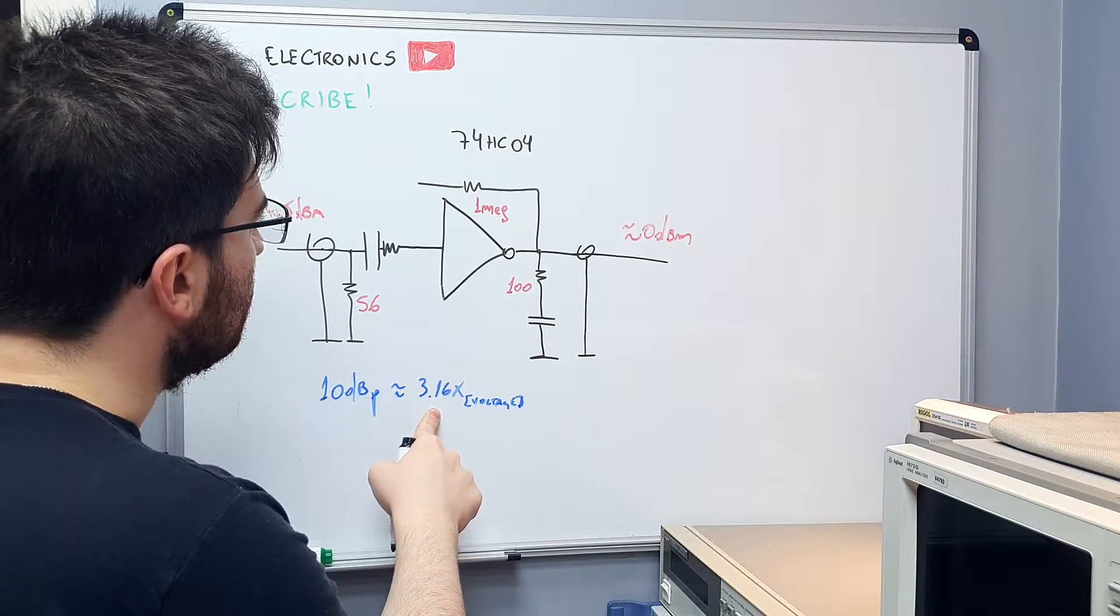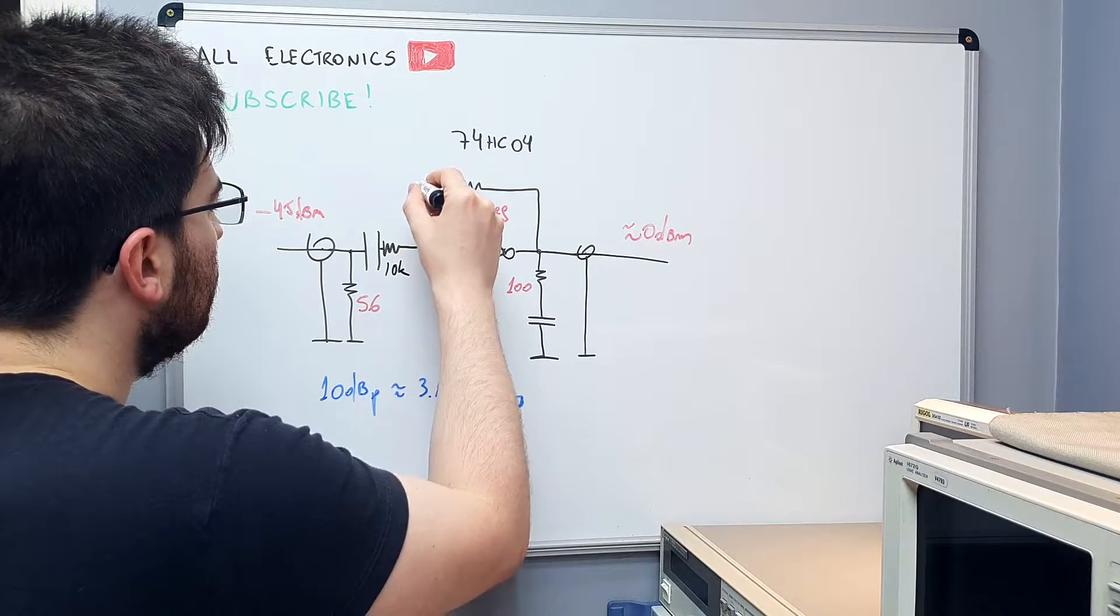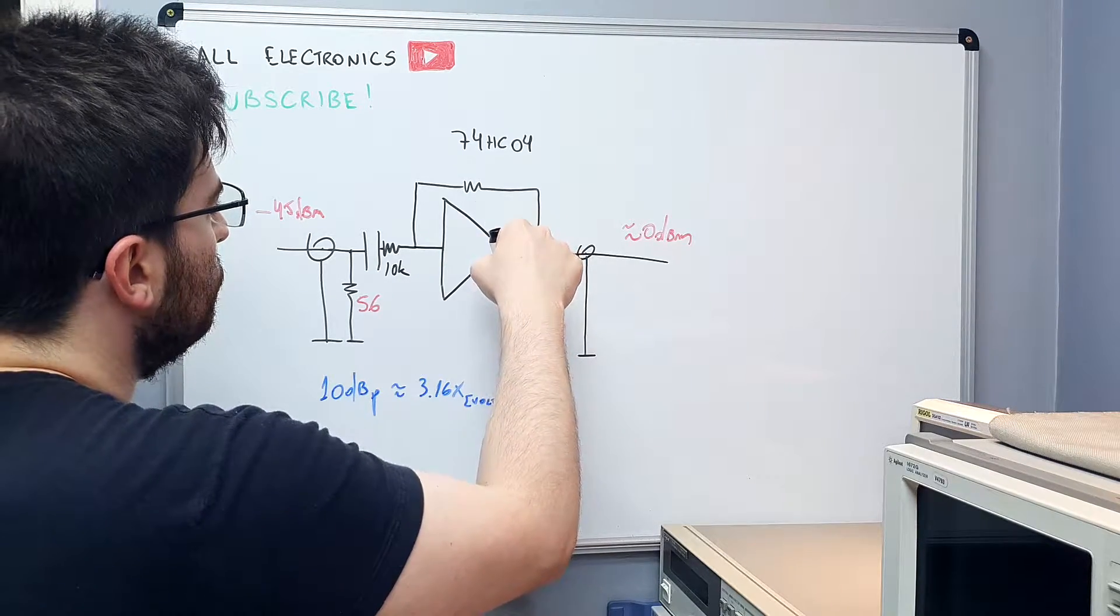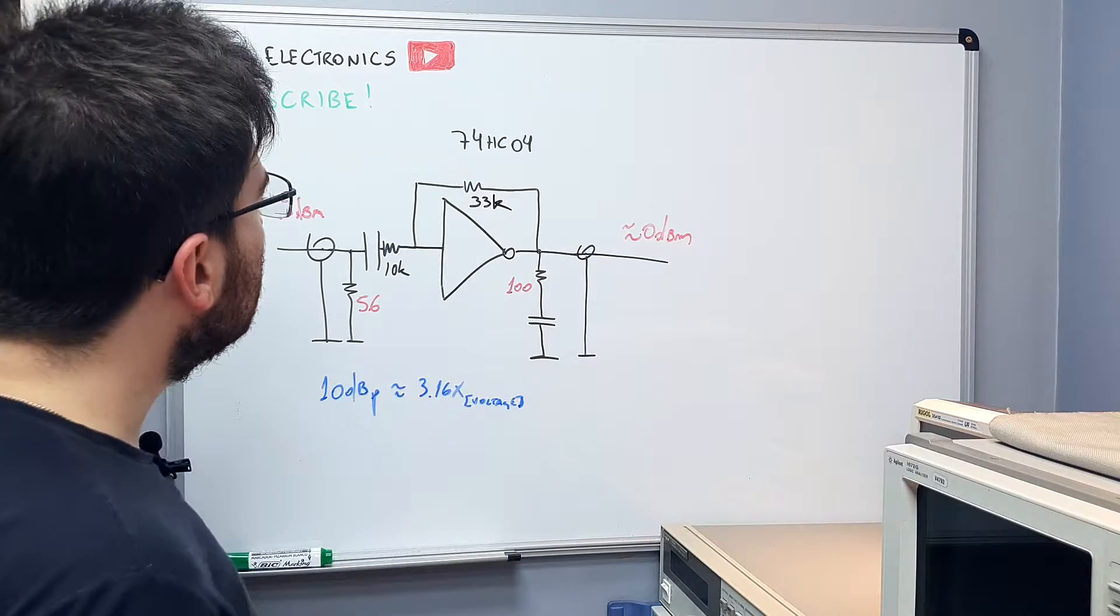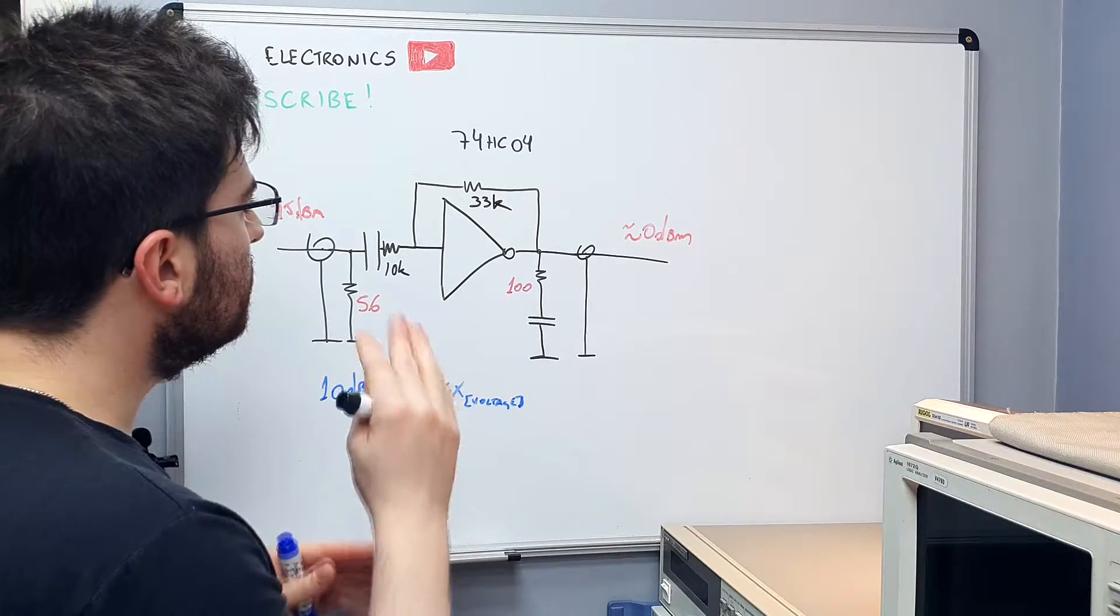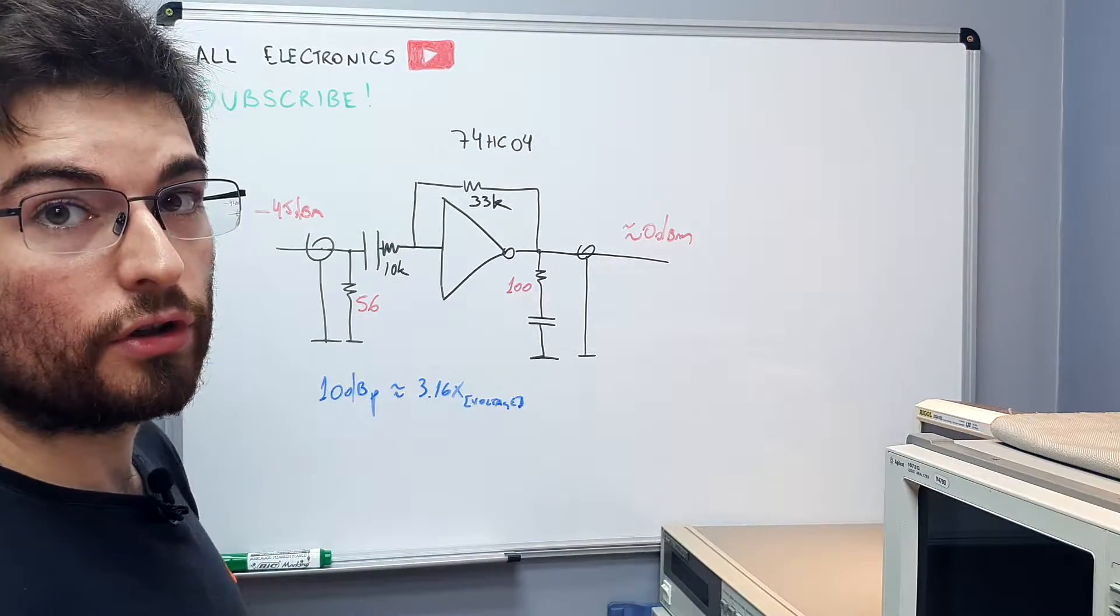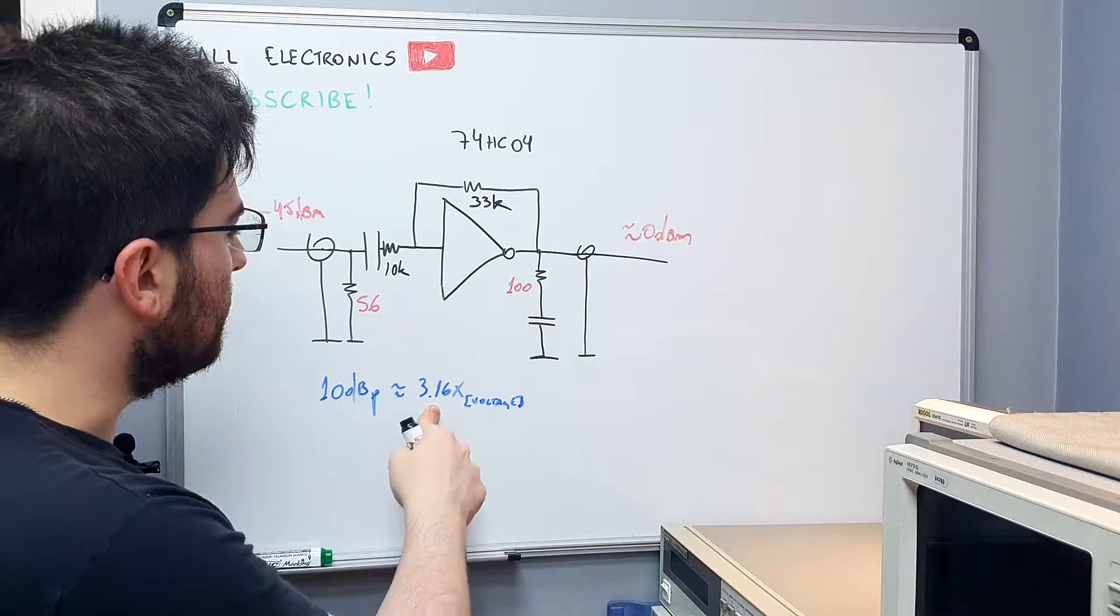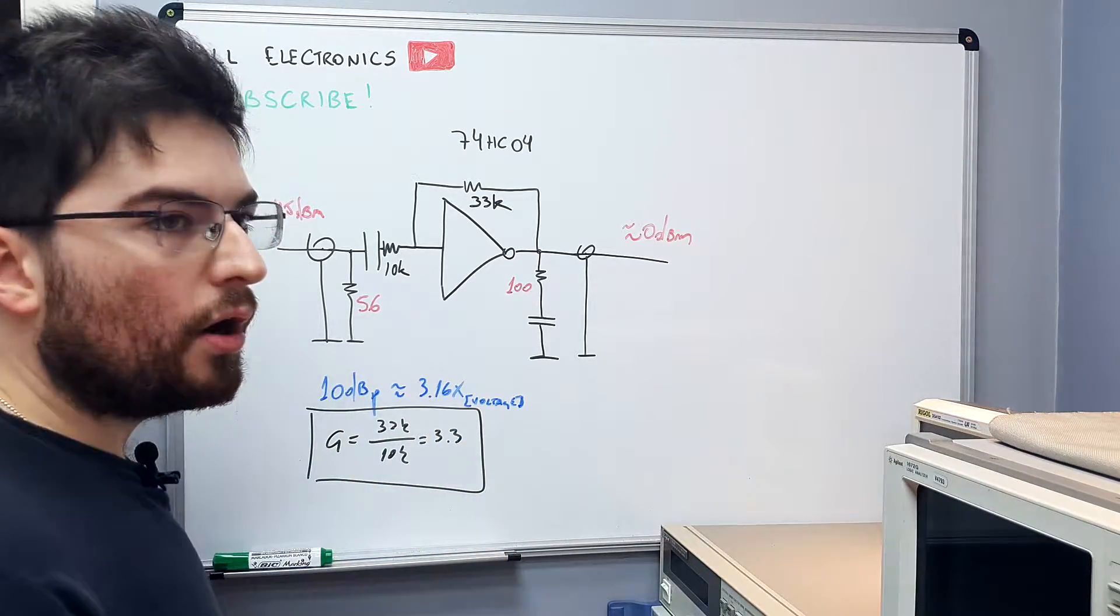Let's see. To get 3 times gain we can try to use 10k resistor here and change this resistor here to be 33k. So as an inverter configuration, the closed loop gain of this stage for signal not for noise gain would be almost 3.16. But this is the closed gain for an infinite open loop gain.